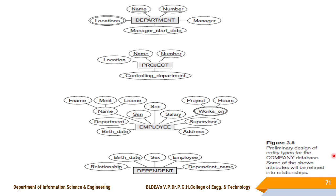Next is the preliminary design of entity types for the company database. Department is an entity type, represented using a rectangle, with the name in uppercase — DEPARTMENT. Ovals are used for attributes, and attribute names must be capitalized — starting letter is capital. Name and Number are underlined, indicating these are key attributes. Location is shown with a double oval, making it a multi-valued attribute.